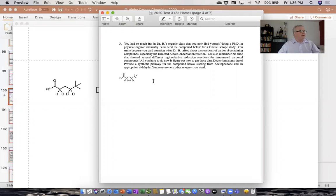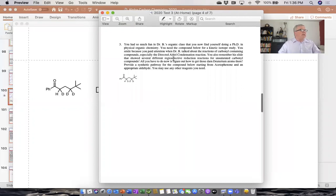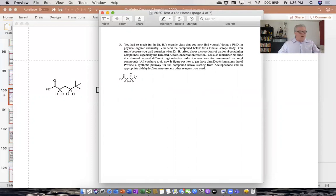What we're going to find out is that we can easily exchange deuterium for hydrogen if they're somewhat acidic. We can do that by just throwing them in with heavy water as opposed to regular water, and the exchange will happen. Gave you some hints here, talked about a directed aldol reaction and also regioselective reduction reactions. All of those are in the notes.